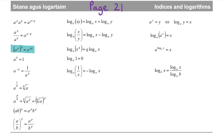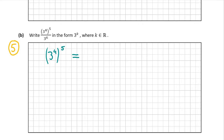Let's see what that goes to using our rules on page 21 of the formula and tables book. It's the third rule down on the left-hand side of the page: a to the power of p, all to the power of q, is equal to a to the power of p multiplied by q. Using that rule, 3 to the power of 4, all to the power of 5, is going to be 3 to the power of 4 multiplied by 5, which is equal to 3 to the power of 20. So that gives us 3 to the power of 20, all over 3 to the power of 6.